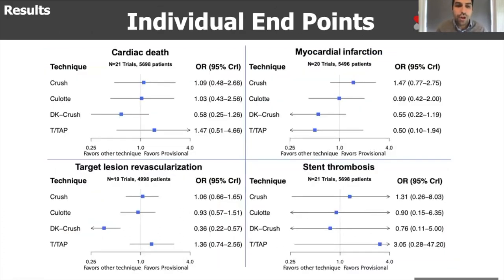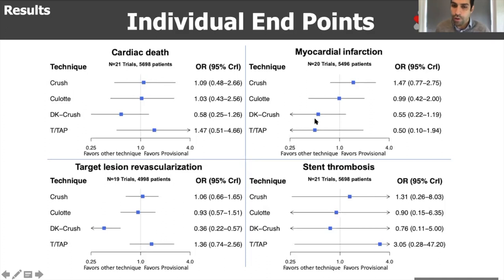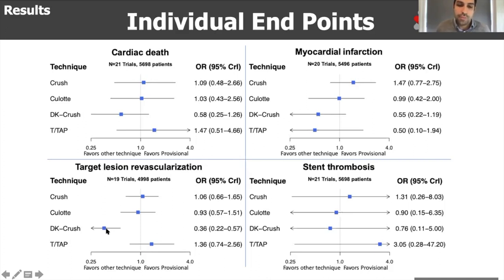To understand where this difference comes from, we analyzed four individual endpoints. There is no difference in cardiac death — all 95% credible interval lines touch 1. There is no difference in myocardial infarction, though the DK CRUSH line trends left while still touching 1. However, for target vessel revascularization, DK CRUSH shows a clear advantage, mainly driven by a reduction in target lesion revascularization with a point estimate of 0.36. Finally, no difference was found in stent thrombosis rates between bifurcation techniques.